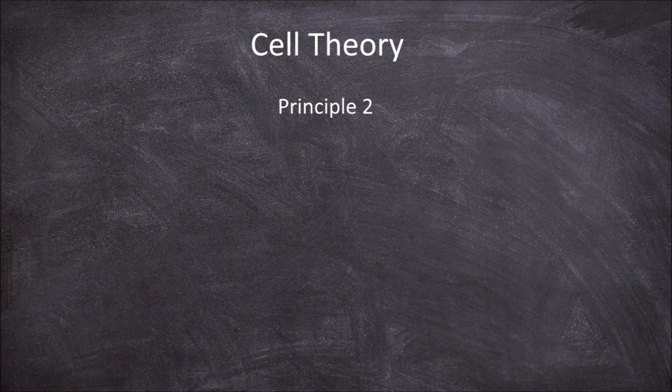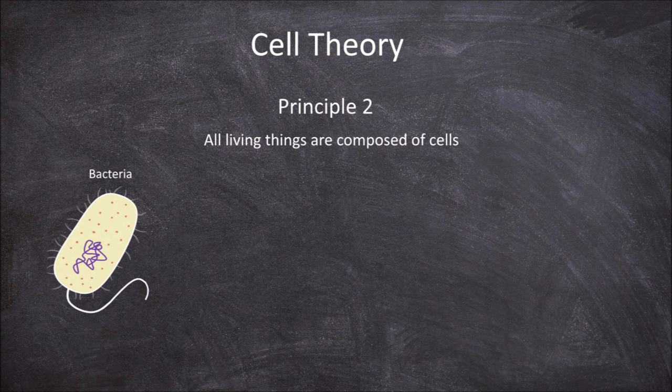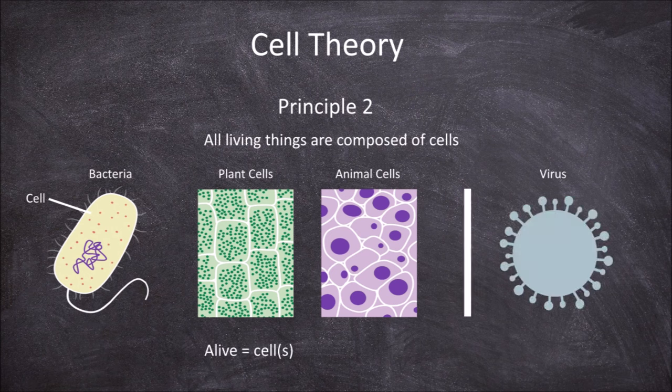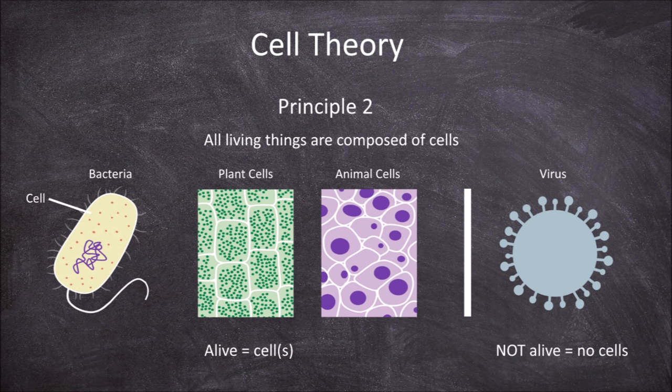The second principle of cell theory is that all living things are composed of cells. If you look at any living thing, you will find it is composed of cells. Bacteria are living and made up of a cell. Plants and animals are living and made up of many cells. Viruses are not alive and are not made up of cells.